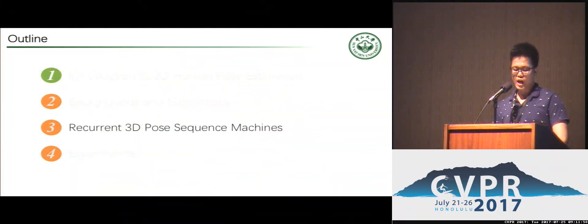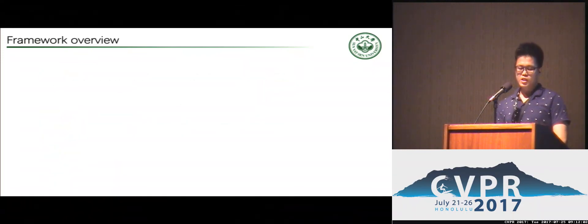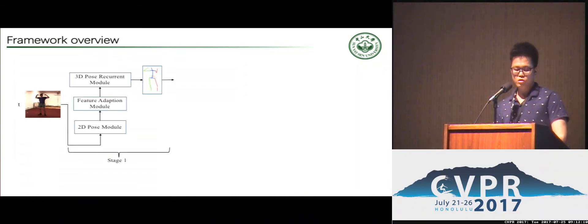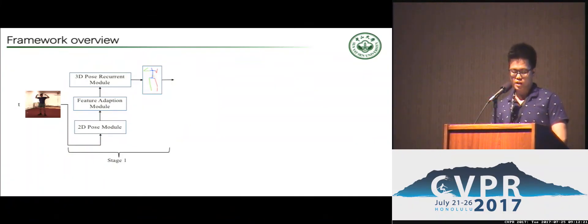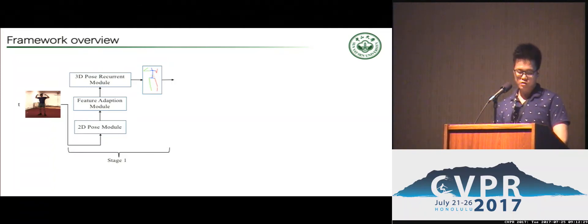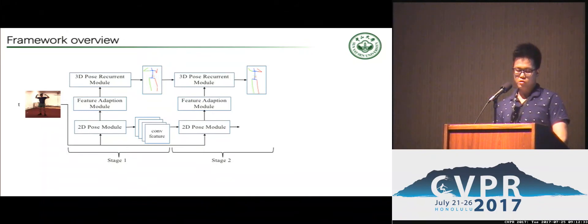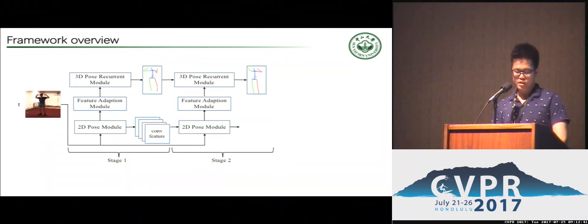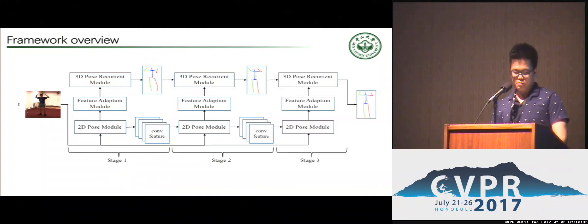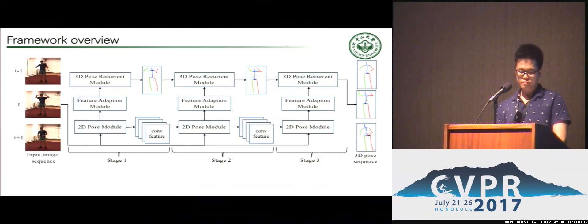I will now talk about our Recurrent 3D Pose Sequence Machine, abbreviated RPSM. Given a video clip at a timestep, the image is passed through a 2D Pose feature module, a feature-adaption module, and a 3D Pose recurrent module sequentially to predict the coarse 3D pose. This is stage 1 of RPSM. The same 3D pose module is then applied to the output of the first stage, where the 3D pose predicted in stage 1 is also connected as input to the 3D pose recurrent module. The same operation is applied in stage 3. Finally, the 3D pose sequence is predicted as the timestep moves. Temporal information is applied in the 3D pose recurrent module.